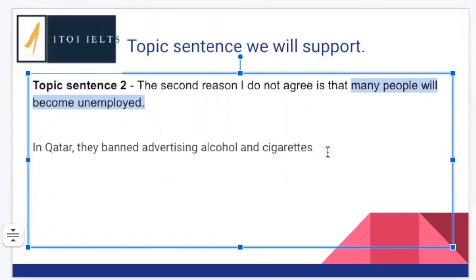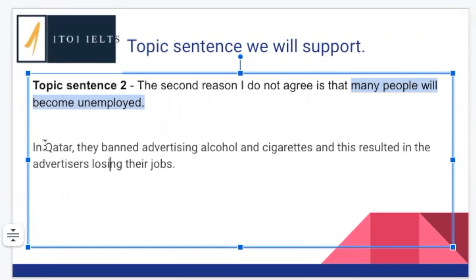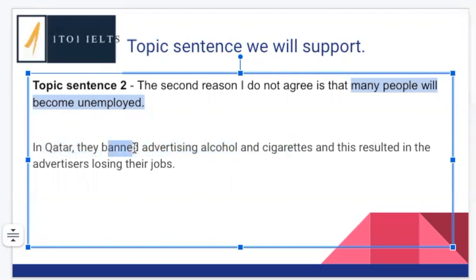Nabila says the result is that advertisers lost their jobs. In Qatar, they banned advertising alcohol and cigarettes, and this resulted in advertisers losing their jobs. Have we got a specific example? Yes — we've got a specific country, a specific thing that was being advertised, there was a ban which is exactly what the question is talking about, and there is a result: lots of people lost their jobs. This is a very specific, relevant example. You're showing that in Qatar there has been a ban, and the result of this ban is that advertisers lost their jobs — it's definitely supporting our main idea.